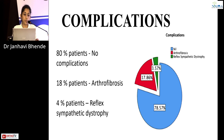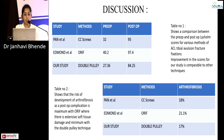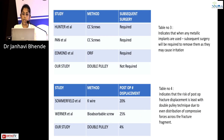80% of our patients had no postoperative complications; 18% developed arthrofibrosis and 4% developed reflex sympathetic dystrophy. We compared our study with similar studies in literature. Table one shows a comparison of preoperative and postoperative Lysholm scores for various ACL tibial avulsion fracture fixation methods, with improvement in our study comparable to other techniques. Table two shows that the risk of arthrofibrosis is maximum with open reduction internal fixation due to extensive soft tissue damage, and minimum with the double pulley technique. Table three indicates that when metallic implants such as cannulated cancellous screws or K-wires are used, subsequent surgery is required to remove them, which is not the case with the double pulley technique. Table four indicates that the risk of postoperative fracture displacement is least with the double pulley technique due to even distribution of compressive forces across the fracture fragment.